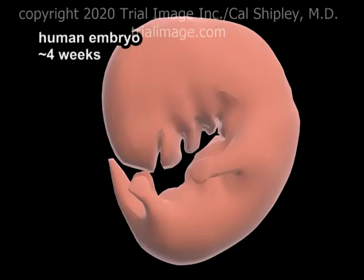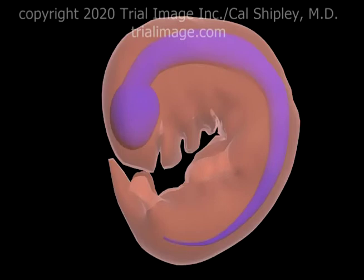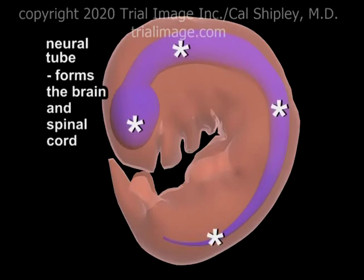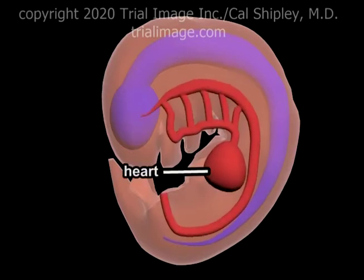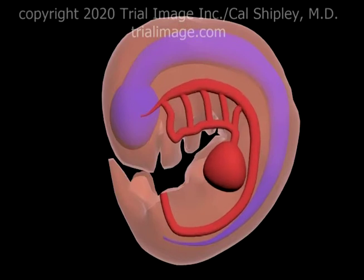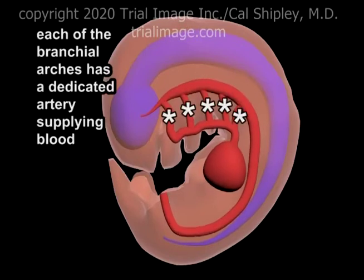Running the length of the four-week-old embryo is the neural tube, which will eventually develop into the central nervous system, including the brain and spinal cord. At just four weeks of development, the heart is already active and circulating blood throughout the embryo, with a pulse rate of about 120 beats per minute. Each of the branchial arches has an artery dedicated to its blood supply.